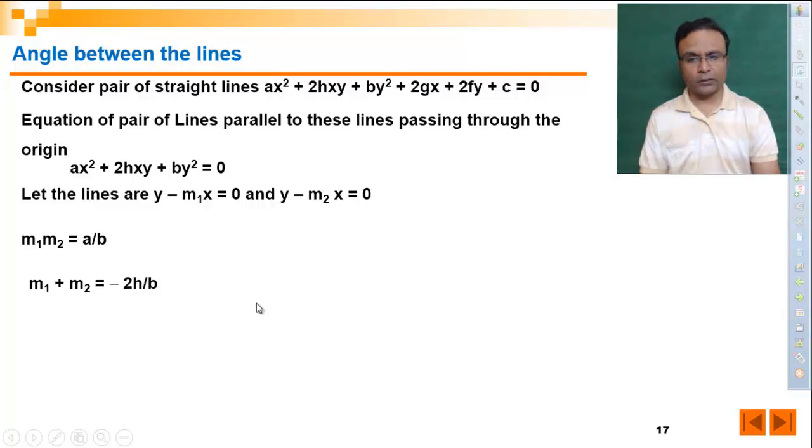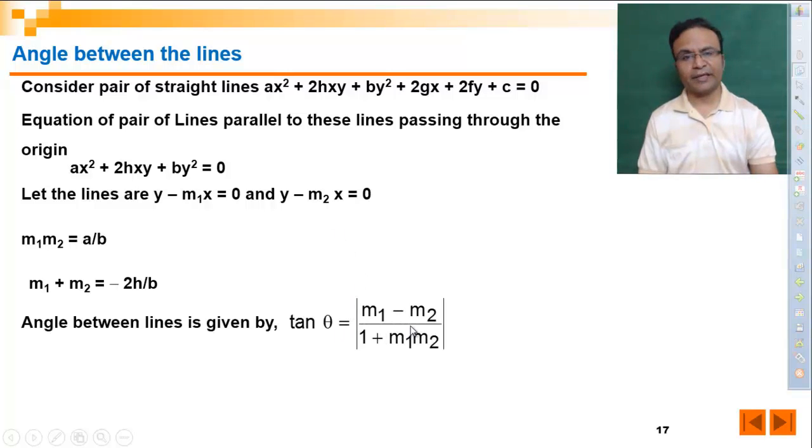Now for lines having slopes m1 and m2, the angle formula is tan theta equals modulus of m1 minus m2 upon 1 plus m1m2.